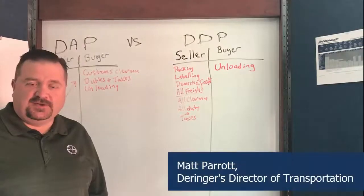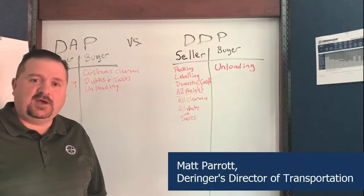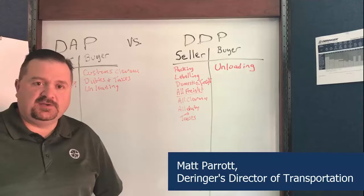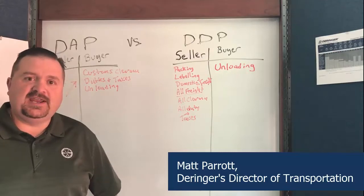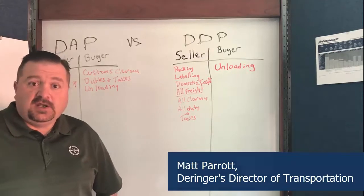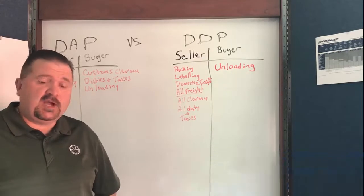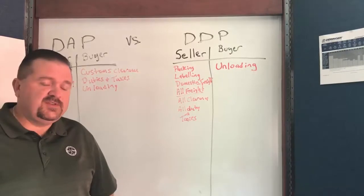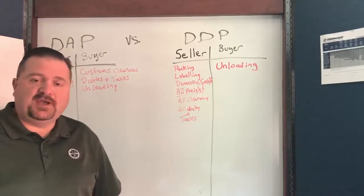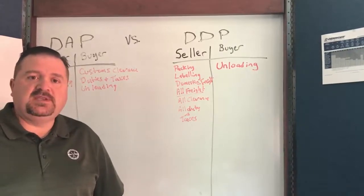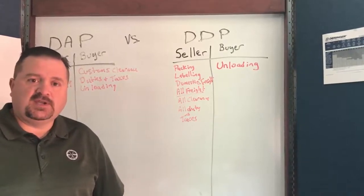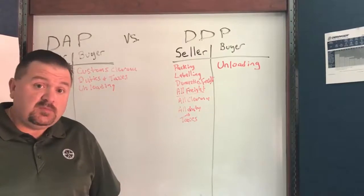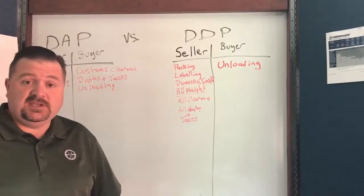Hi, thanks for tuning in today. My name is Matthew Parrott and I'm the Director of Transportation for A.N. Derringer. Today we're going to talk about a couple more Incoterms. Previously I had spoken about Ex-Works and FOB, and today we're going to talk about two other Incoterms: DDP and DAP.